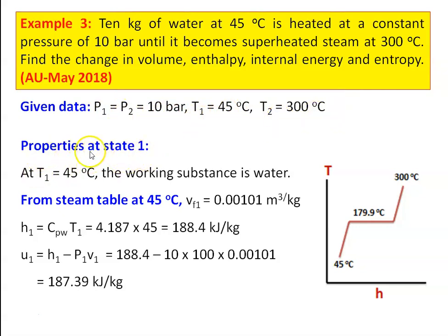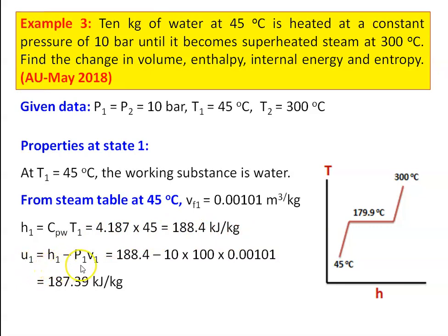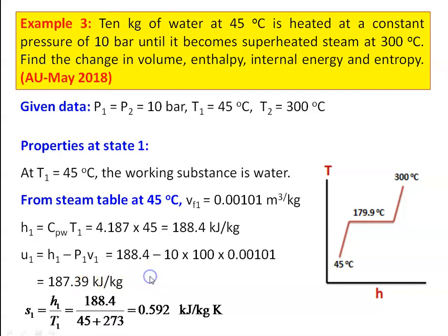At state 1 (water, T1 = 45°C): from steam table, Vf1 = 0.00101 m³/kg, H1 = Cpw × T = 4.187 × 45 = 188.4 kJ/kg. U1 = H1 − P1·V1 = 188.4 − 10×100×0.00101 = 187.39 kJ/kg. Entropy S1 = H1/T1 = 188.4/(45+273) = 0.592 kJ/kg·K.